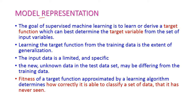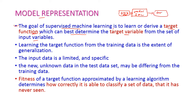The goal of supervised machine learning is to learn or derive a target function which can best determine the target variable from a set of input variables. This is our supervised machine learning model. It requires training data, and from that training data the model will be trained and produce the target function, which determines the target variable. Hence the target variable will be highly dependent on the input variable.